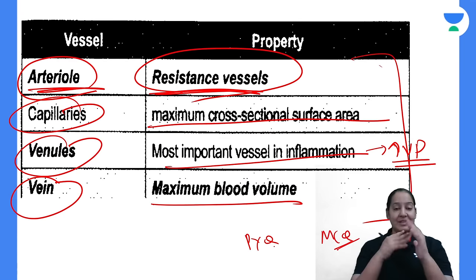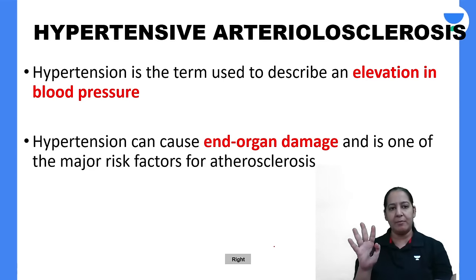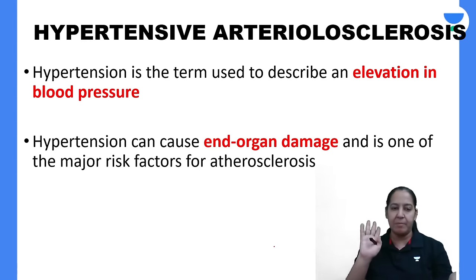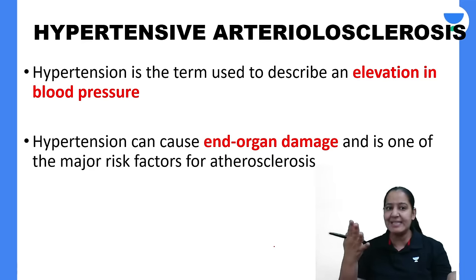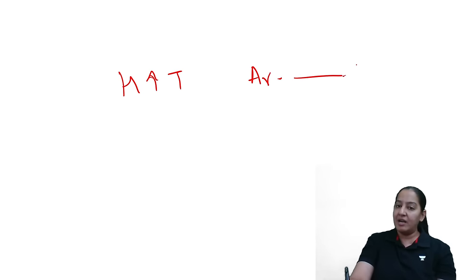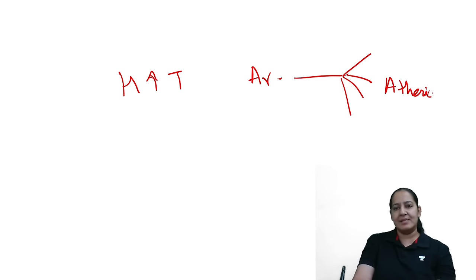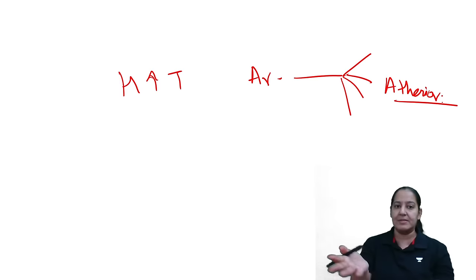With this overview, we proceed to the diseases. The first disease is hypertensive arteriosclerosis. We will discuss five diseases total: hypertensive arteriosclerosis, atherosclerosis, aneurysm, aortic dissection, and vasculitis. In hypertensive arteriosclerosis, the continuous increased pressure inside the blood vessel causes damage to the vessel wall — the arteries undergo sclerosis as a part of adaptation.